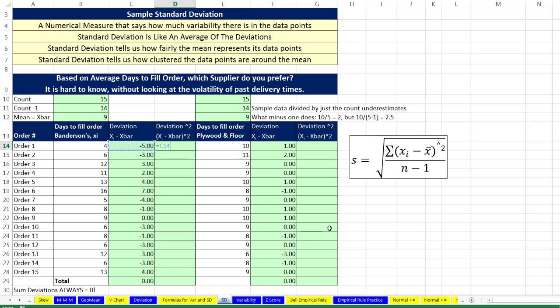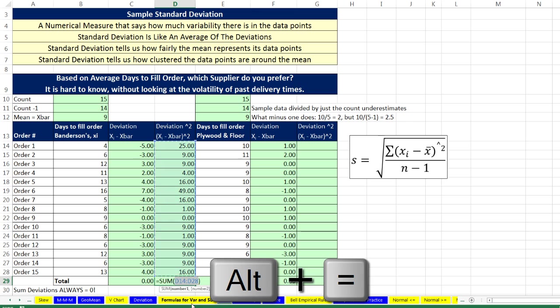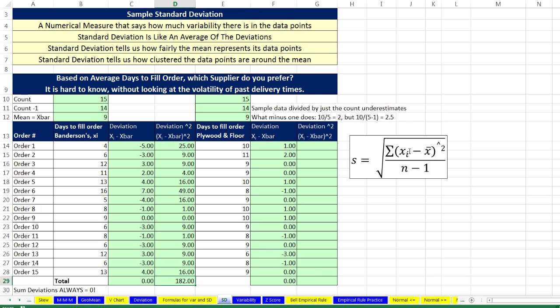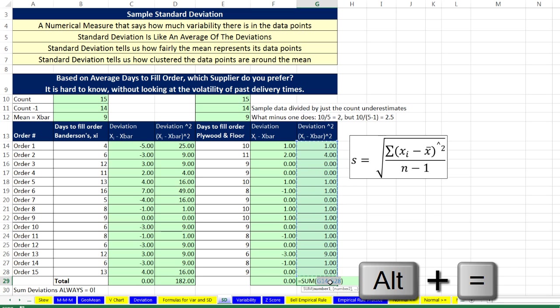We're going to take our deviation and square it. Control-Enter. Now remember that we squared all these. That's, in essence, why at the end we have to take the square root to undo the square. So our mechanism for getting around that zero was squaring, but in the end we take the square root to undo it. Now we've squared all of the deviations. That's that part. The summation sign means we need to Alt-Equals and add them all up. So 182, that's the numerator here. Now let's do this for plywood and floor, equals deviation caret 2, Control-Enter, copy it down. Now we can add this up, Alt-Equals, Control-Enter, and that 20 for plywood and floor, that's the numerator there.